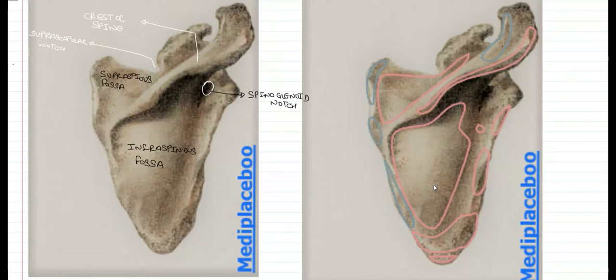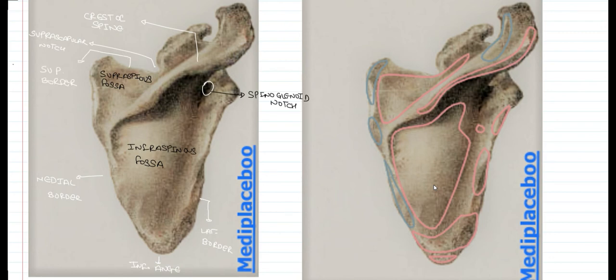There is also the suprascapular notch, which is covered by the transverse scapular ligament, converting the notch into a foramen. Through this foramen traverses the suprascapular nerve, while the transverse scapular vessels pass above the ligament.